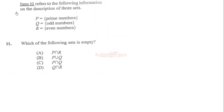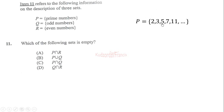Let us continue from question 11 to 20 of May 2018. Item 11 refers to the following information on the description of three sets. Set B is prime numbers, so we can let B equal to two, three, five, seven, eleven and so on. Then we have set Q which is odd numbers, so Q is one, three, five, seven, nine, eleven.